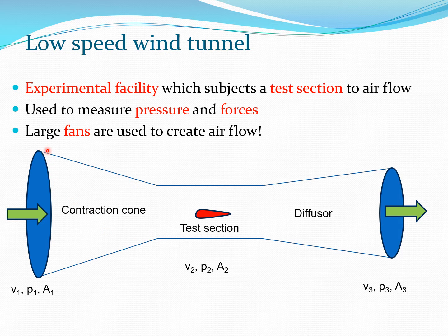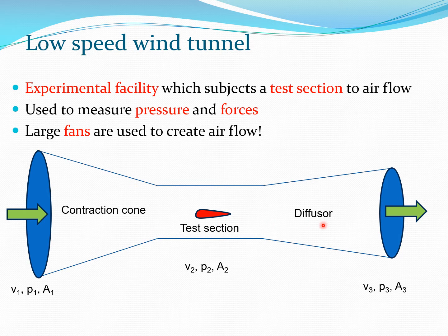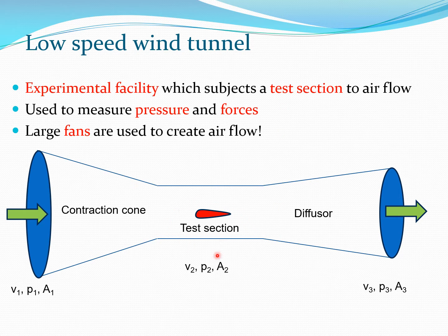The wind tunnel typically has a schematic as shown in this figure. There is a region where the air speeds up, known as the contraction cone. There's a test section placed somewhere in the middle, and towards the later part of the wind tunnel there is something known as a diffuser, where the air slows down again.